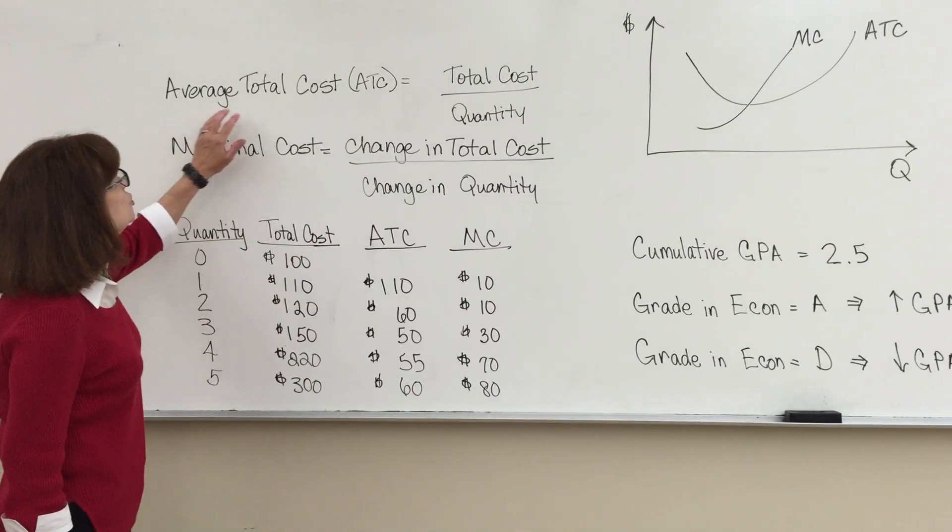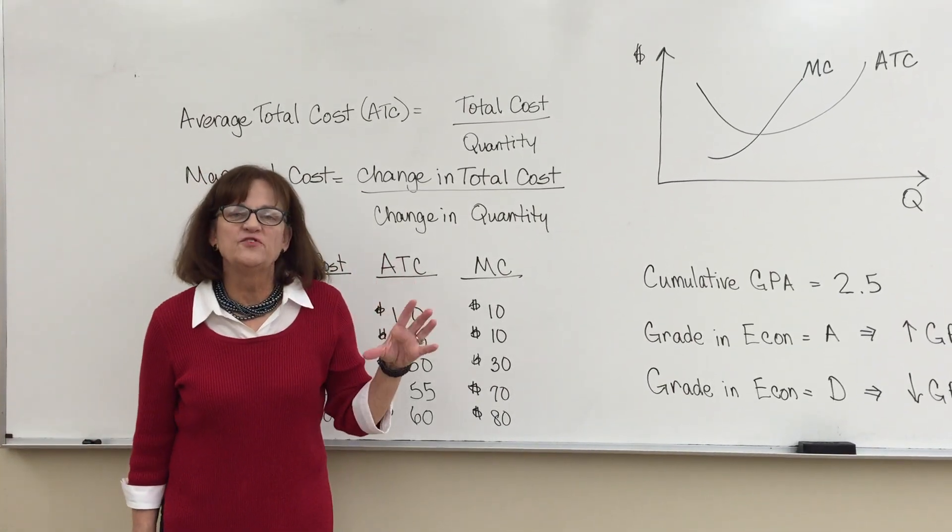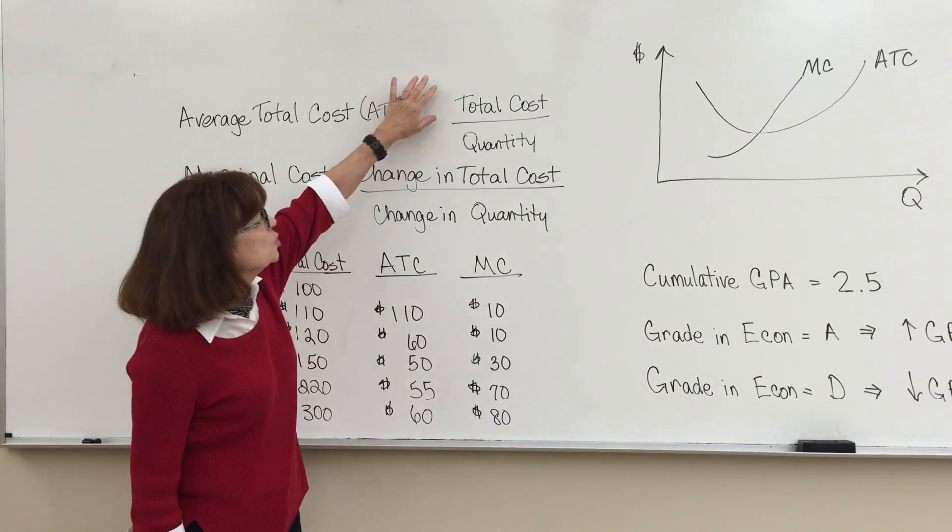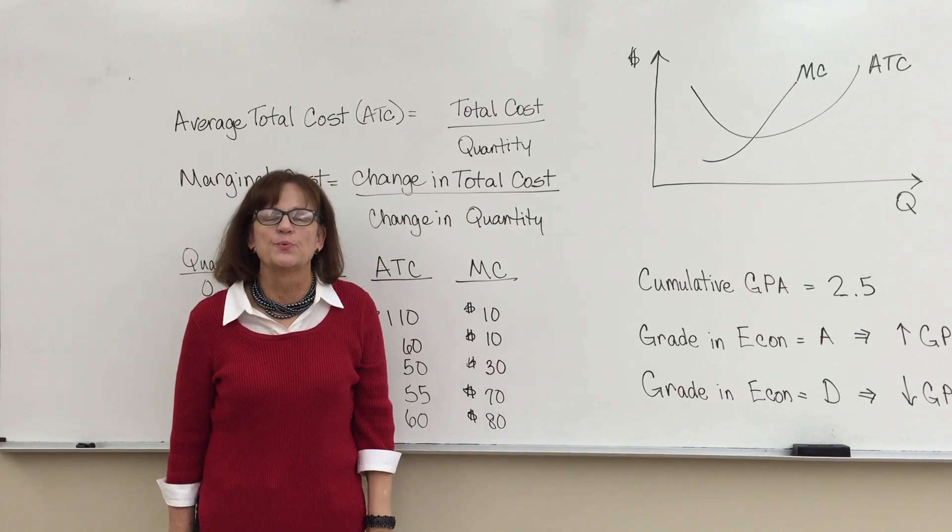The average total cost is the average cost of making one unit of your product. It is the total cost of running your business divided by the total quantity of goods or services you produce.